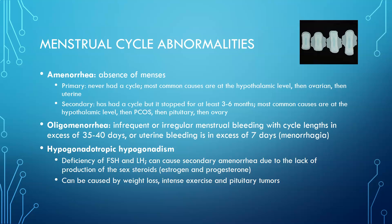Oligomenorrhea is infrequent or irregular menstrual bleeding with cycle lengths in excess of 35 to 40 days, or uterine bleeding in excess of seven days, which is called menorrhagia. Hypogonadotropic hypogonadism refers to a lack of GnRH, LH, and FSH at the gonadotroph level, resulting in insufficient stimulation of the ovaries to release estrogen and progesterone.